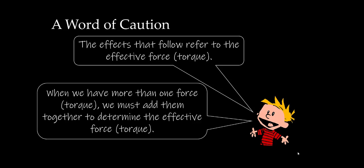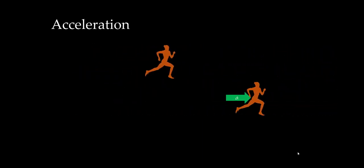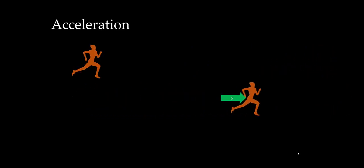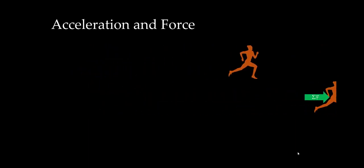When we have more than one force or torque, we must add them together using the rules of vector addition. In this case, we determined that in order to speed up, we have an acceleration that's in the direction of the velocity. What caused that acceleration? The effective force, or the sum of the forces, caused that acceleration. Note that the direction of the effective force is always in the direction of the acceleration.